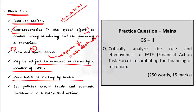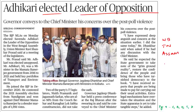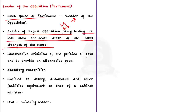With that, we come to the end of the FATF topic. The next article topic is: Adhikari elected leader of opposition. Recently, assembly elections were held in many states and these states are appointing new leaders of opposition. Let us take this article as an opportunity to revise about the post called the leader of opposition. In each house of parliament — Lok Sabha and Rajya Sabha — there is a leader of opposition. The leader of the largest opposition party having not less than one-tenth of the total seats of the house is recognized as the leader of opposition.